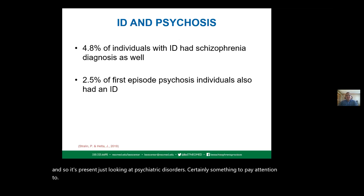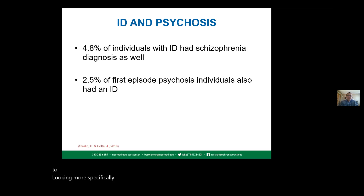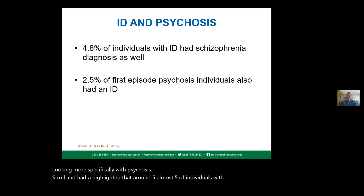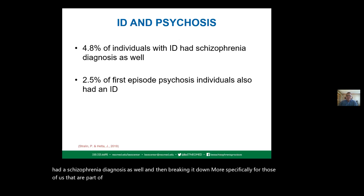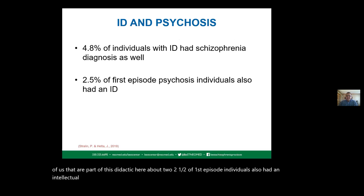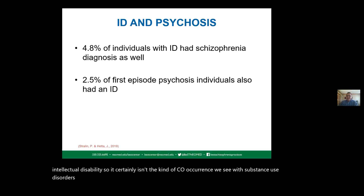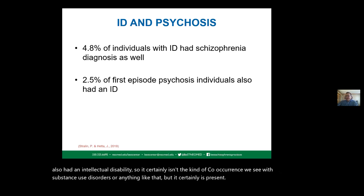Looking more specifically at psychosis, Stralin and Heather highlighted that around 5% of individuals with intellectual disabilities also had a schizophrenia diagnosis. About 2.5% of first episode psychosis individuals also had an intellectual disability. It certainly isn't the co-occurrence we see with substance use disorders, but it is present and something to pay attention to.